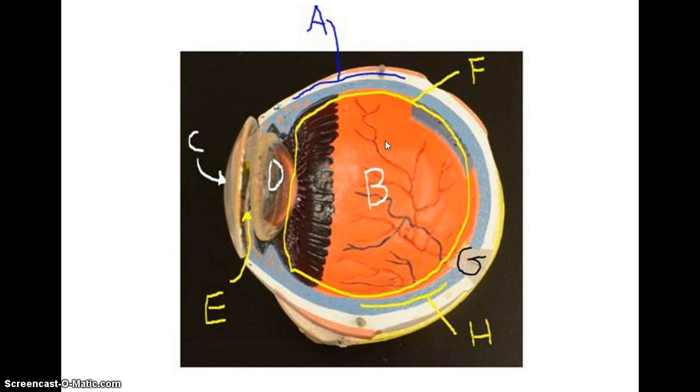Now we're looking at a cross section of the eye. Again, you can see the sclera, the outer white part. This blue layer in here is called the choroid layer. Then you have the retina, which is this red layer where the rods and cones, those photoreceptors, are going to be located.